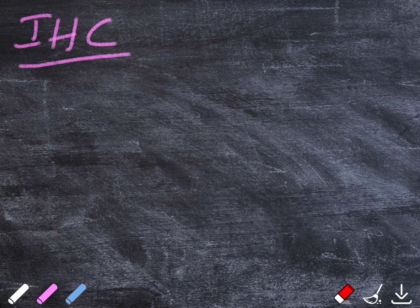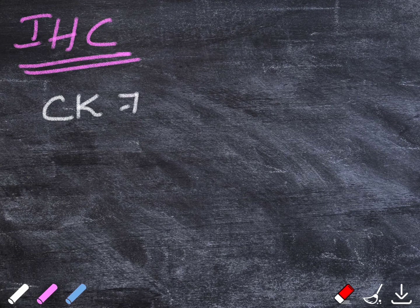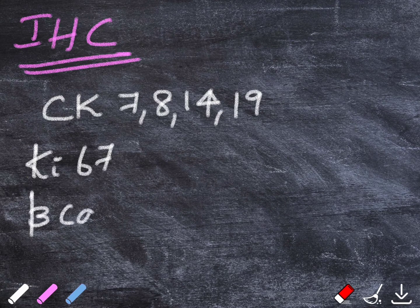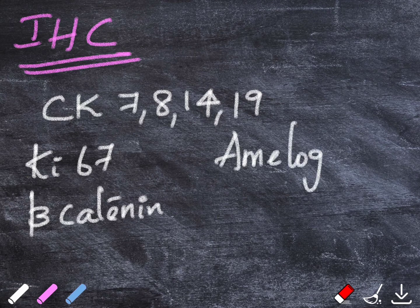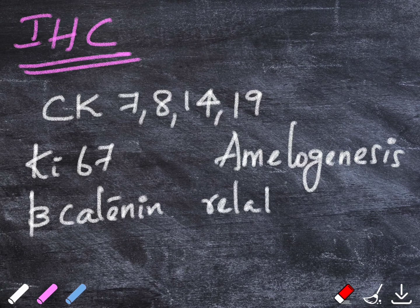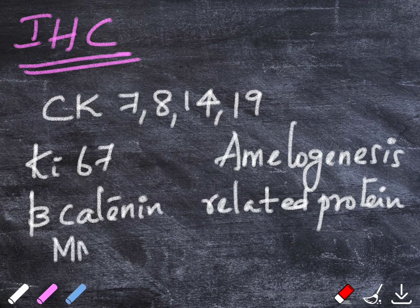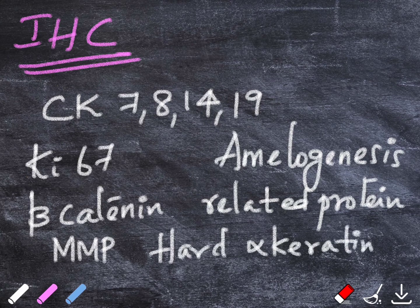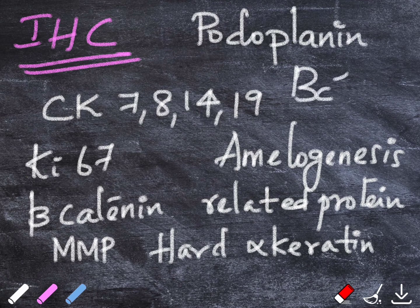We'll talk about the immunohistochemical markers that are traditionally used in case of COC. These are cytokeratin-7, 8, 14, and 19, Ki-67, beta-catenin, then amelogenesis-related proteins because calcified material is there. This may also help in identification. Then the matrix metalloproteinases, the hard alpha-keratin, podoplanin, and then the apoptotic marker which is BCL2.